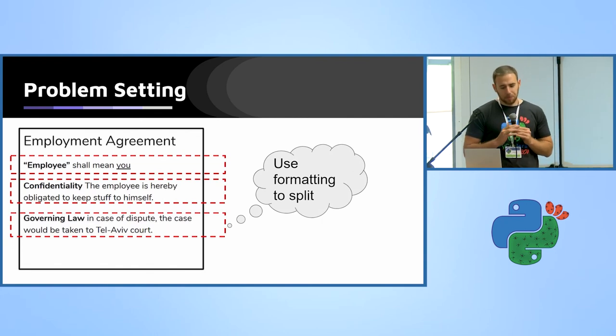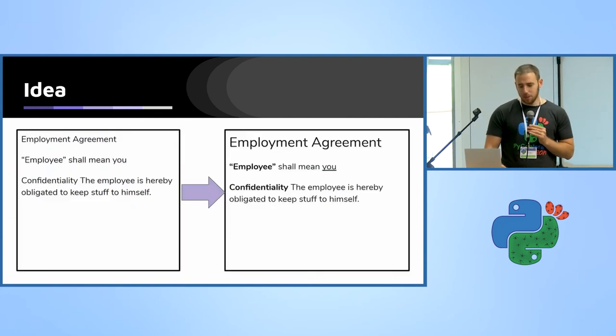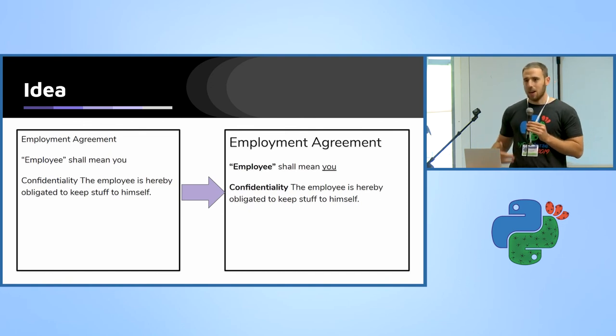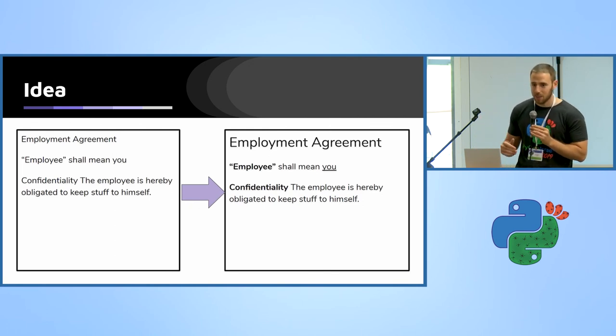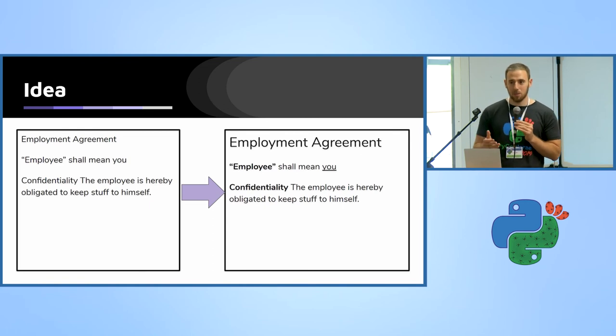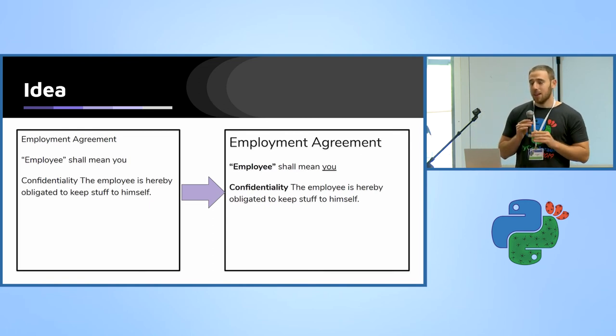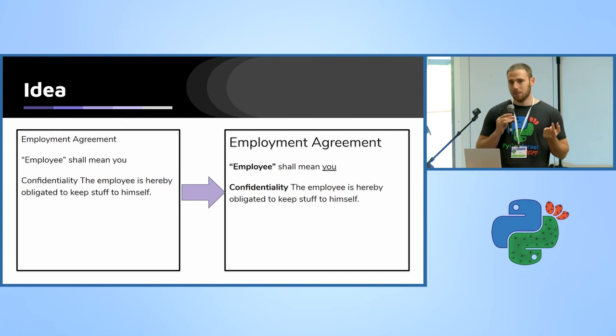So the idea is to take documents that were formatted correctly, learn how to format a document according to its context. For example, 'governing law' is the name of a clause, then 'governing law' usually should be in bold or in headline, and I can know to label it just purely from context. And then once I train the model how that formats a document from context, I can split the document according to the styling.